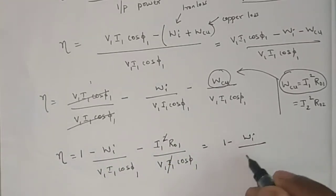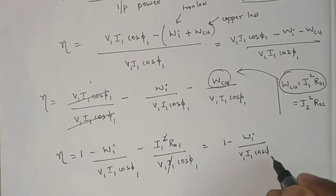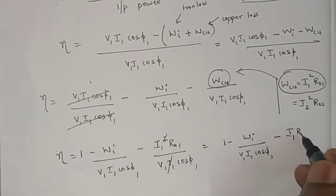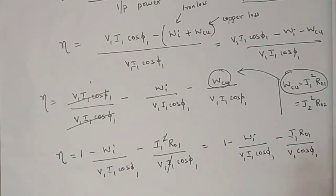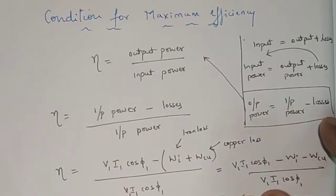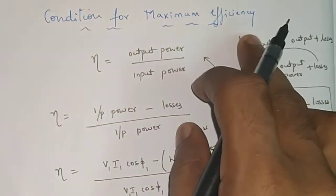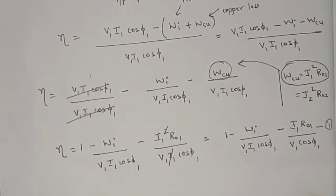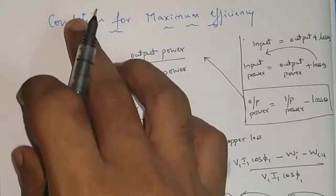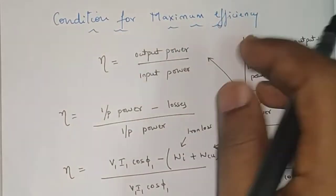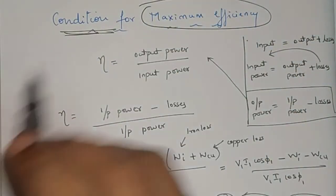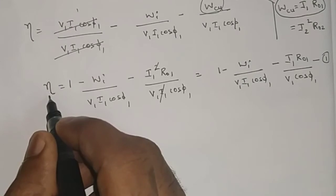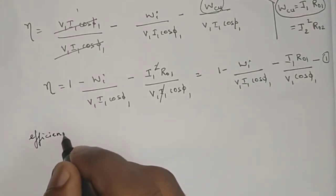After substituting, I get: eta equals 1 minus iron loss divided by V1·I1·cos φ1, minus I1·R01 divided by V1·cos φ1. I will take this as equation number one. My target is to find out the condition for maximum efficiency. To find the maximum efficiency, efficiency is maximum when we differentiate eta with respect to I1 and equate it to zero.